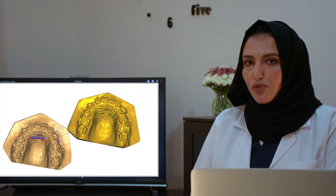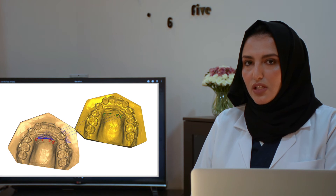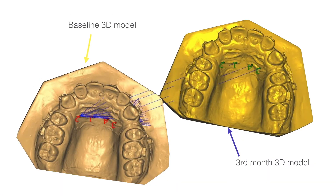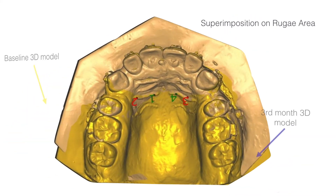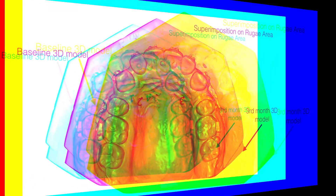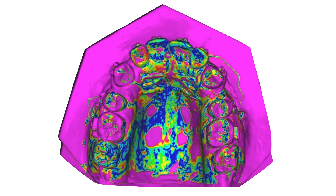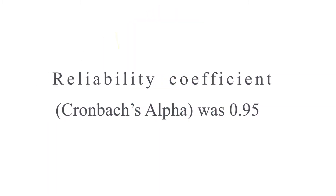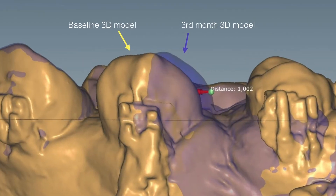To measure the amount of tooth movement we used the 3D digital model. At this example we have a baseline and a third-month 3D digital model. We superimposed them on the rugae area and stable points, and then performed best-fit color matching — with blue indicating the best match and red the worst. A buccal view of the upper left canine shows measurement tools on the Ceramill Mine software.